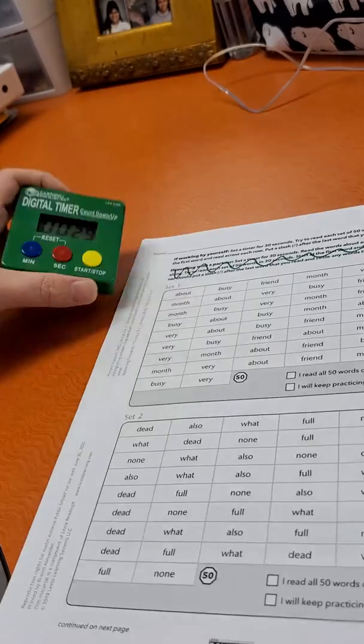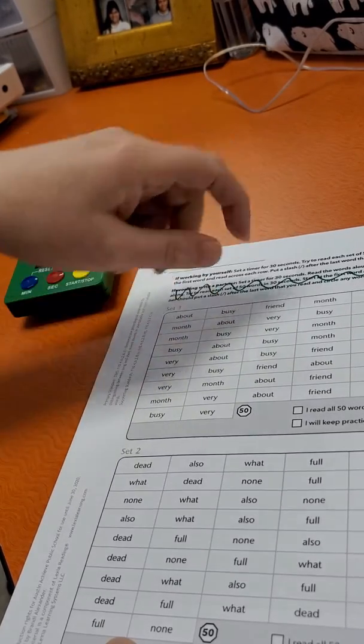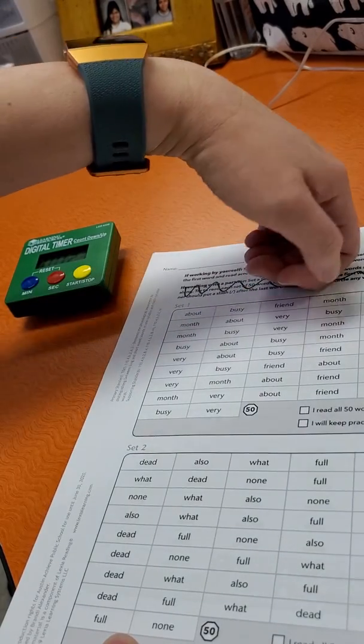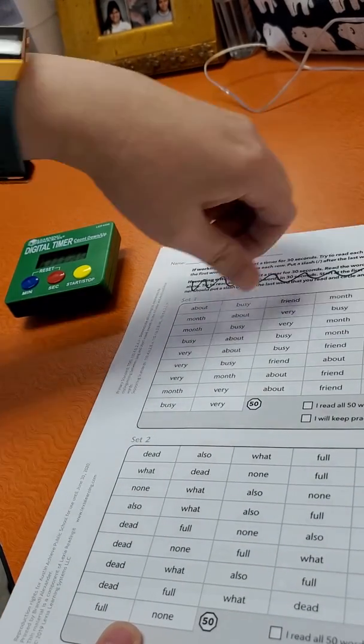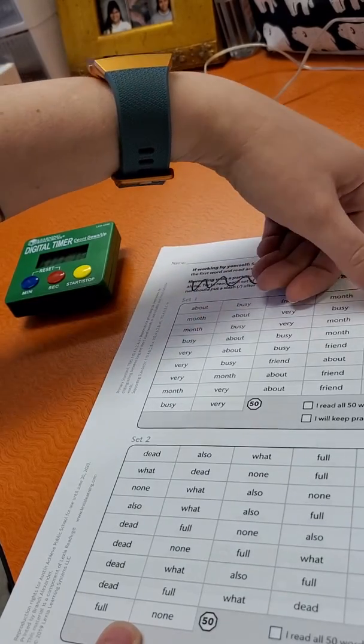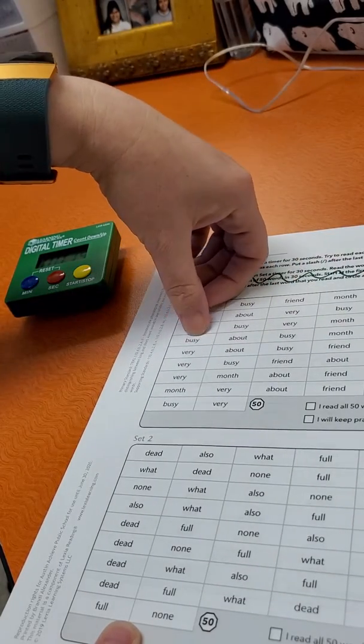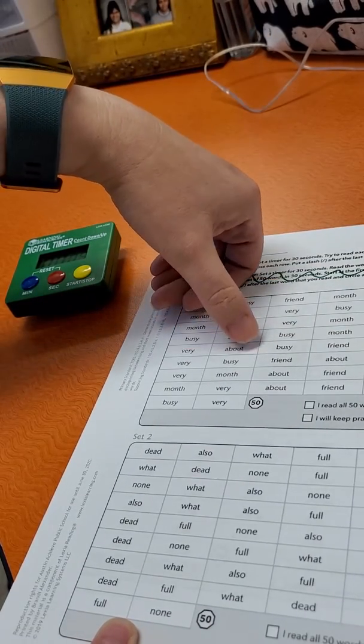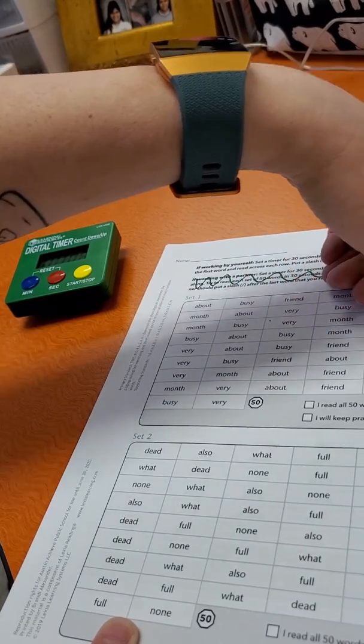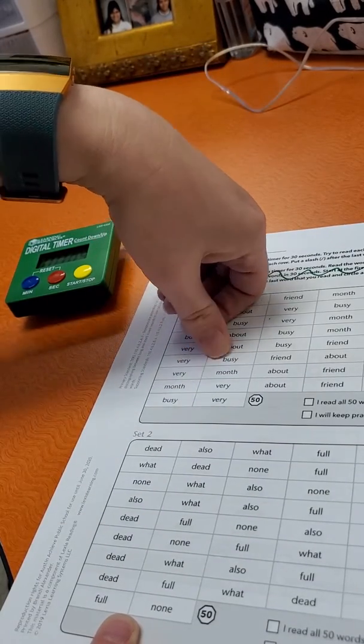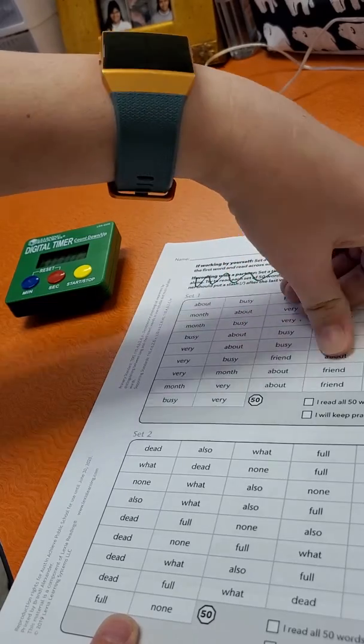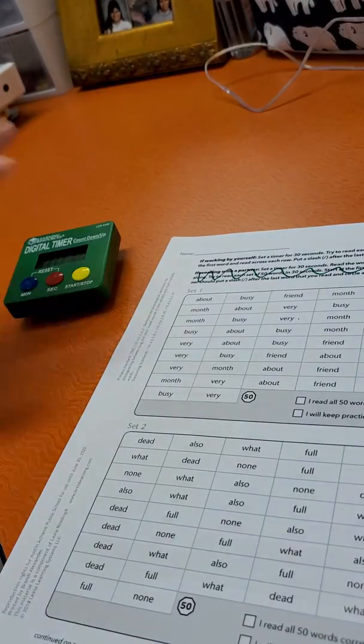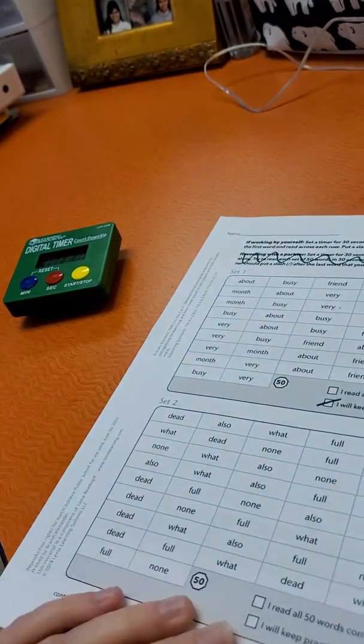Okay, so here's an example. About, busy, friend, month, very, friend, month. About, very, busy, friend, about, month, busy, very, month, friend, very, busy, about, busy, month, about, friend, very, about, busy, friend, month, very, very, month. No, no, busy, friend, about, month, busy. Oh, it stopped. So I put a slash right there. And I say I keep practicing these words.